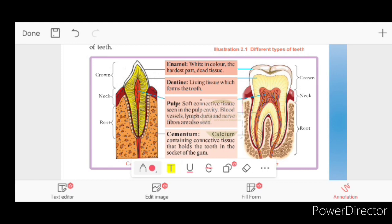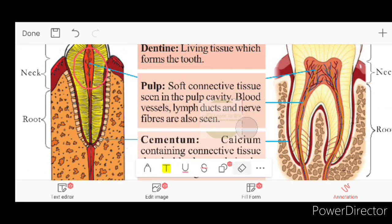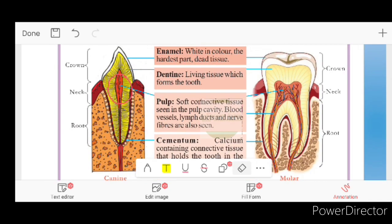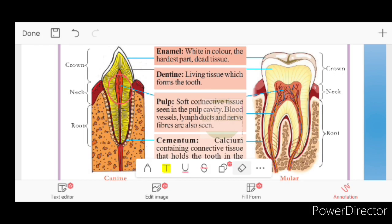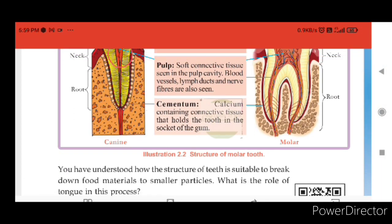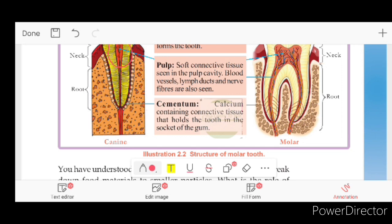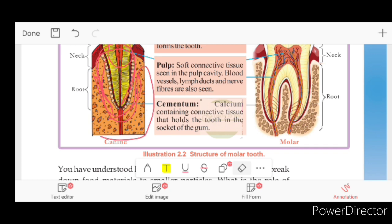The pulp cavity contains blood vessels and nerve fibers. Next, we have cement — a calcium-containing connective tissue that holds the tooth in the socket of the gum. This is how the tooth is structured and held in place.